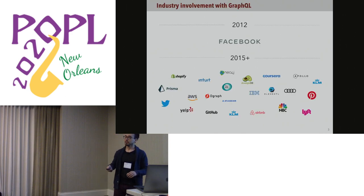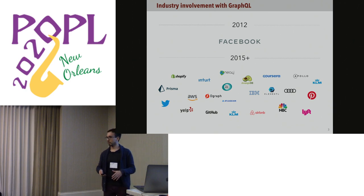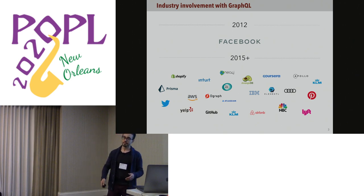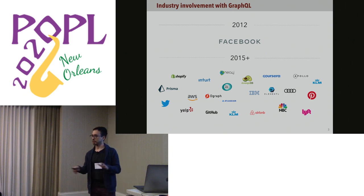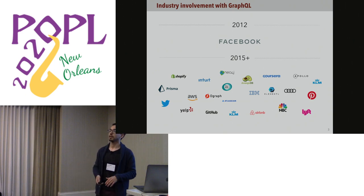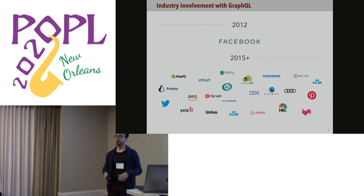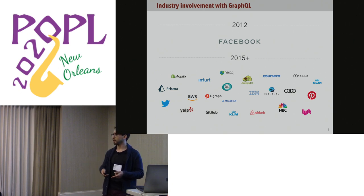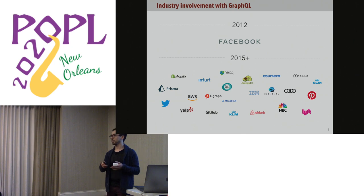GraphQL was designed by Facebook, and they released a public specification along with a JavaScript reference implementation. Since it went public, the community has grown enormously, and now there are major firms that have adopted GraphQL — for instance, GitHub's new APIs are based on GraphQL, and you have Coursera, Airbnb, etc.